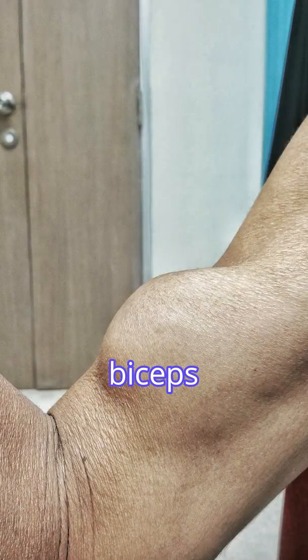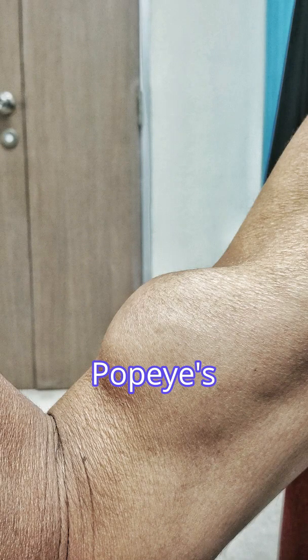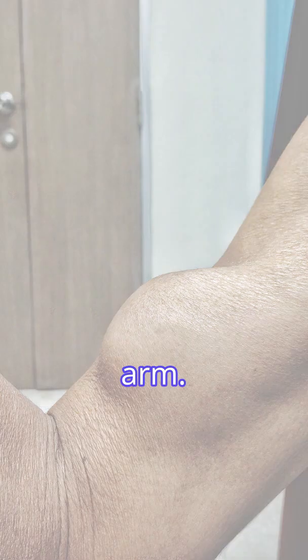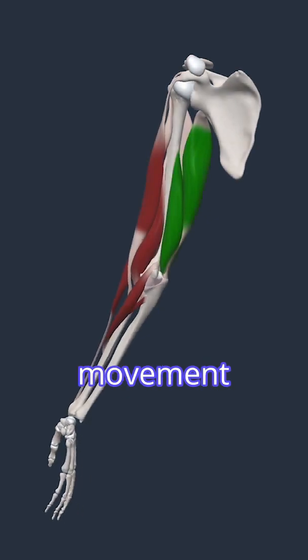A rupture of the biceps tendon can result in what's called a Popeye's muscle or deformity, as the muscle contracts up into a ball in the arm. Let's look at the movement again.